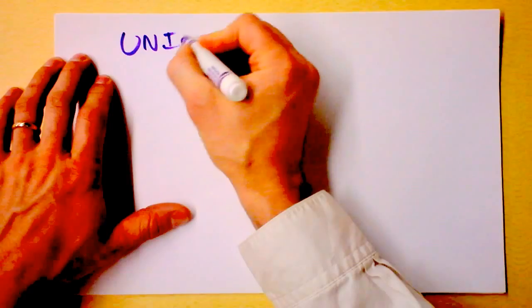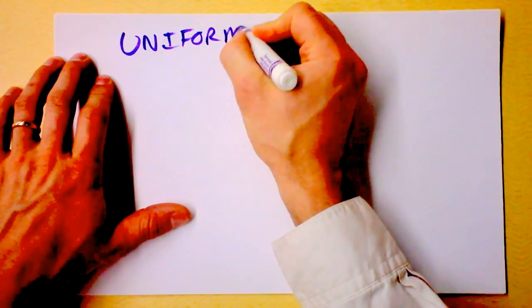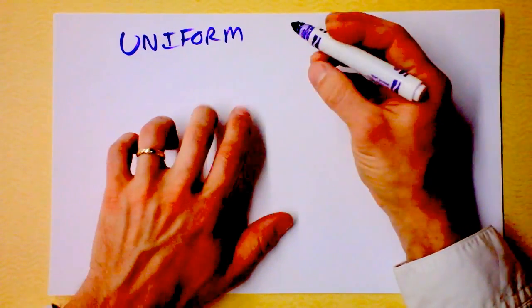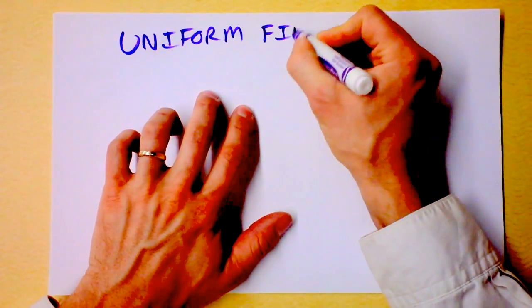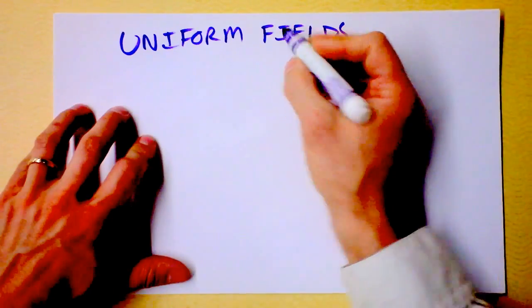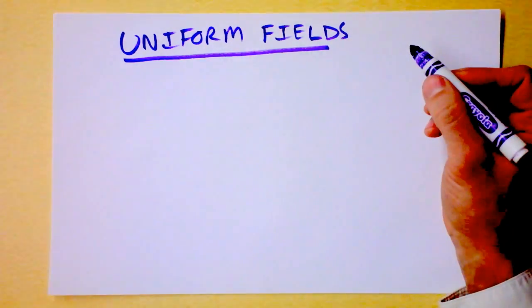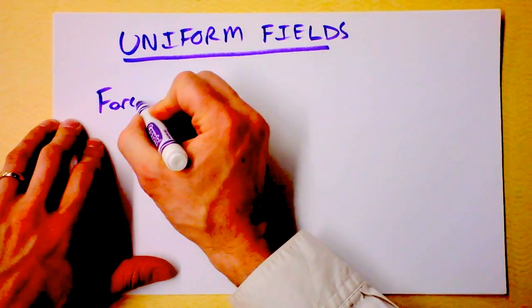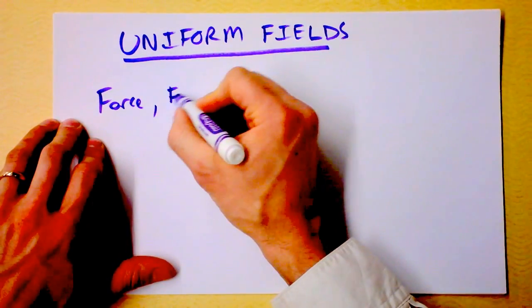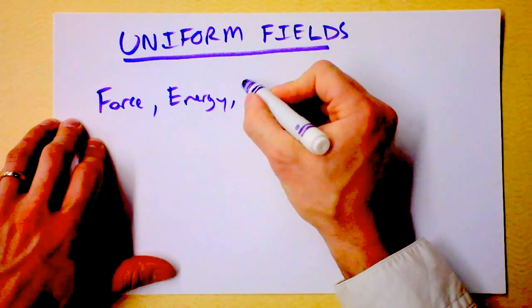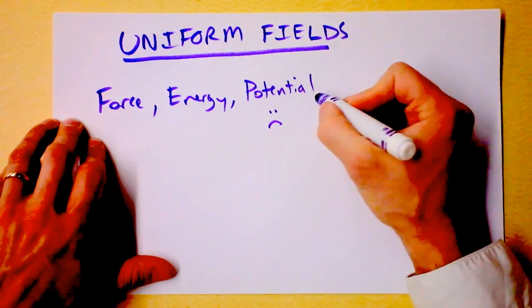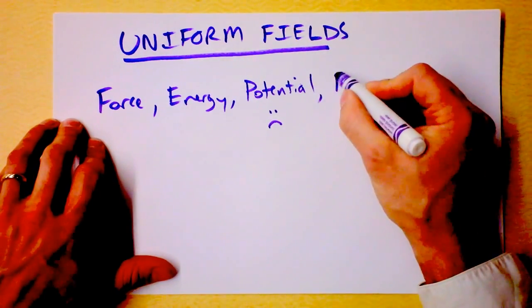I want to discuss uniform fields. A lot of the results that we'll get will be applicable only to uniform fields, but the process will work for any type of field. We can go ahead and preface this with saying these will be uniform fields. I want to discuss the interaction of force and energy and potential, and this is the one that I think is very tricky right now. And then also field, which is a little bit less tricky.